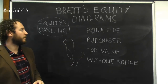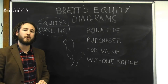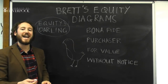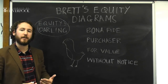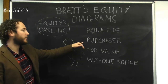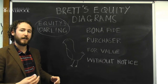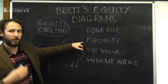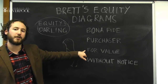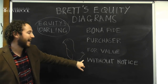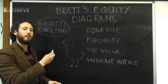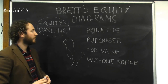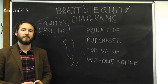Bona fides mean the darling of equity must be acting in good faith. They must be a purchaser, which in equity is simply the recipient of the property — it's not a purchaser in the ordinary sense of the word as it's used today. The 'for value' makes them an ordinary purchaser because they must give valuable consideration. And they cannot have notice of the equitable proprietary right that they're trying to avoid. That's the darling of equity. I hope that helps.